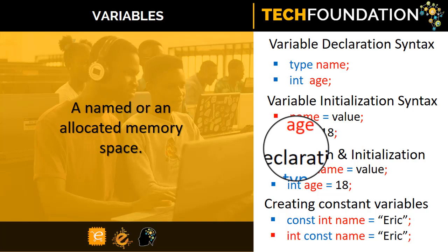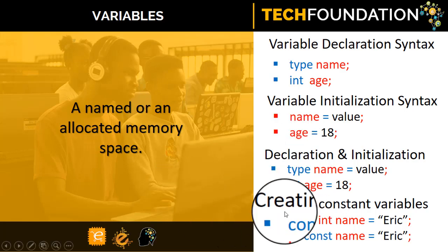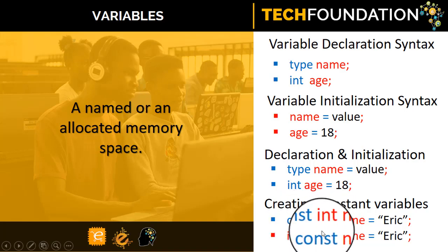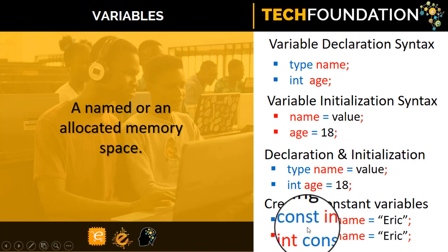Sometimes you do not want the value of a variable, once set, to change. For instance, if you are writing a program to compute the area of a circle, the area is given by pi r squared — pi here is a constant value that doesn't have to change ever. If we create a variable to represent pi, we don't want this value to change. C++ gives you a means of doing that — all you have to do is modify the declaration statement with the keyword const. It doesn't matter whether you bring it first or in between, but it should assume one of these positions. Once you do this, the compiler will prevent you from reassigning or changing the value of this variable.